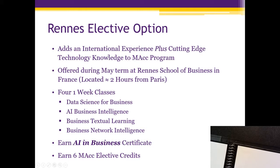For the 18 elective hours, one option is the REN elective — a certificate in Artificial Intelligence in Business offered in conjunction with REN School of Business in France, about two and a half hours northwest of Paris. It's divided into four one-week classes: data science, AI business intelligence, text learning, and network intelligence, worth six elective credits. We're hoping international travel will be a better option starting next year as COVID restrictions ease.